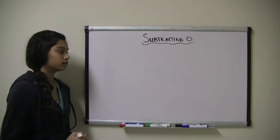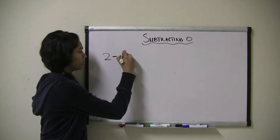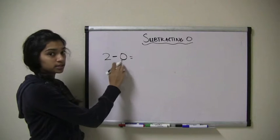Let's take an example. Let's say we have 2 take away 0, or 2 minus 0.